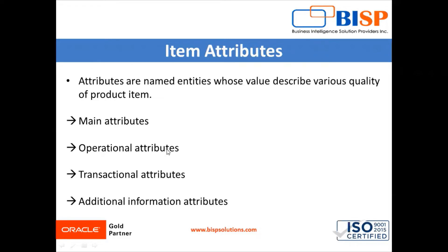Next are transactional attributes. In Oracle Vision application, transactions are required to capture values specific to an item in the transaction context. For example, an automobile dealer sells a car and needs to capture the license plate number of that specific car as part of the transaction. However, when the same dealer sells floor mats, he does not record any such detail. Oracle Fusion application has functionality to capture these transaction-specific attributes.